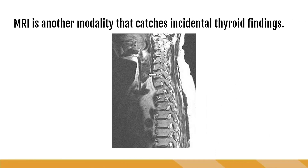MRI stands for magnetic resonance imaging. MRI scanners use strong magnetic fields, magnetic field gradients, and radio waves to generate images of organs of the body. MRI is especially good for looking at muscles, tendons, and bones. MRI is just another modality that tends to catch incidental thyroid findings, especially since it's used to evaluate the cervical spine frequently.